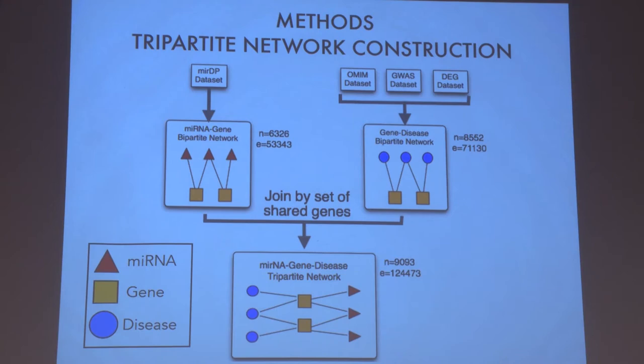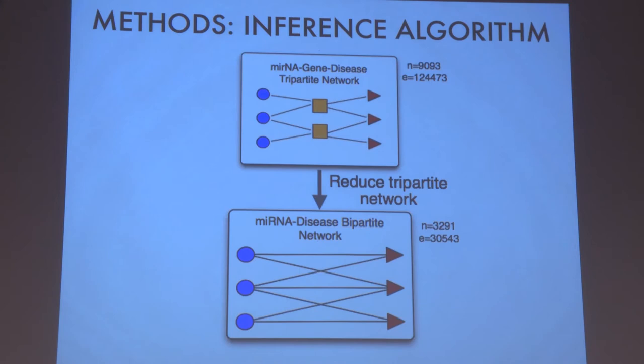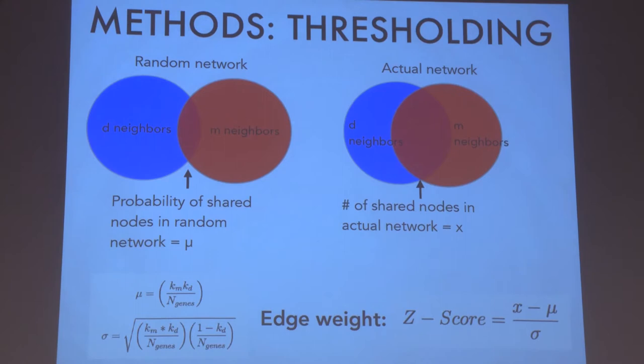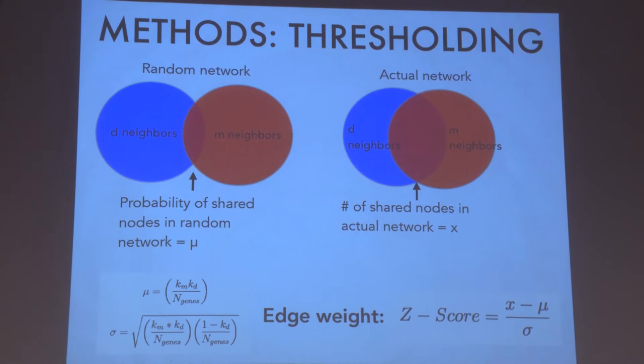I then simplified this tripartite network to a final desired micro-RNA disease network using statistical inference. For every micro-RNA and disease node, I compared the probability of these being connected if the network was random, compared to the actual number of shared nodes in the network, and used these values to compute a z-score. I assigned all micro-RNA to disease edges as the z-score and eliminated all edges with a z-score less than three.